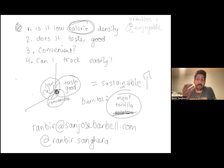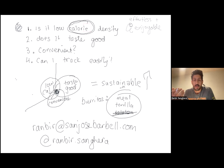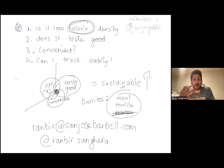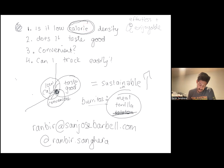Knowing that, if I want to lose fat, my food choices have to be low calorie density. Most whole or real foods are going to be low calorie density — lean proteins, fruits, vegetables. Potatoes and rice, for example, have fewer calories per gram. That's why I choose burritos: it's literally meat and tortillas and sometimes potatoes.